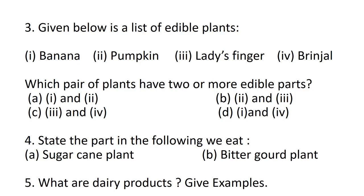Question number 4: State the part of the following that we eat - (a) sugarcane plant, (b) bitter gourd plant. Question number 5: What are dairy products? Give examples.